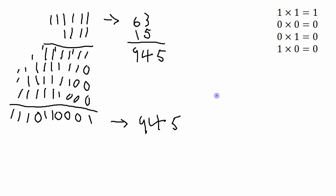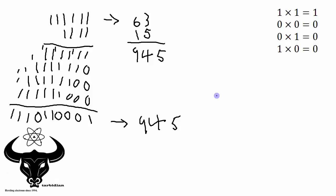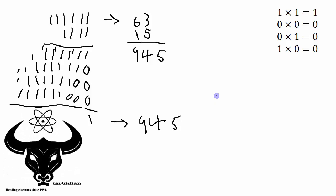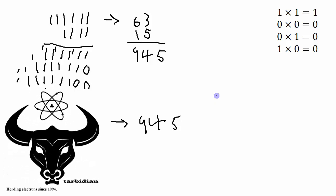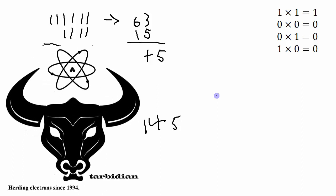Hopefully this gives you some insight into how to do base two multiplication. As we've seen, the multiplication part is actually easier than base ten multiplication, because you're just multiplying ones and zeros together — quite easy to do. Thanks for listening, and I will see you in the next video.